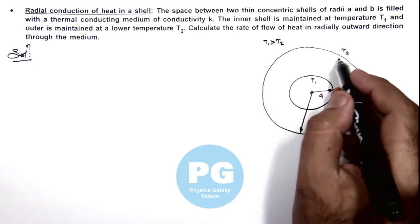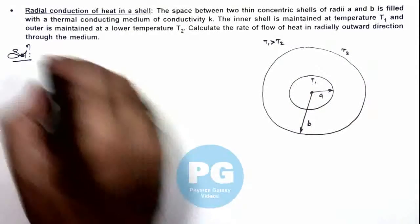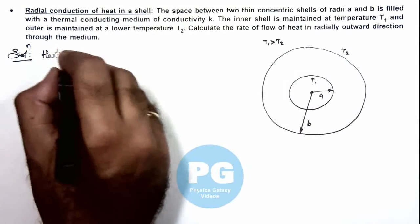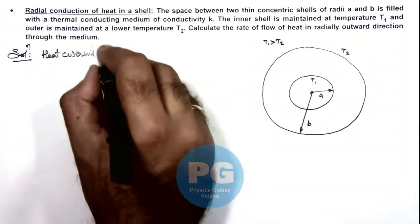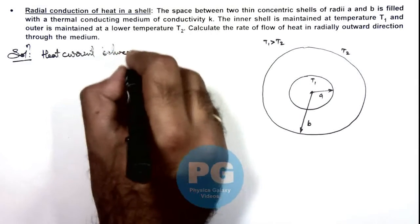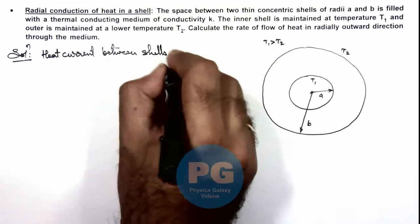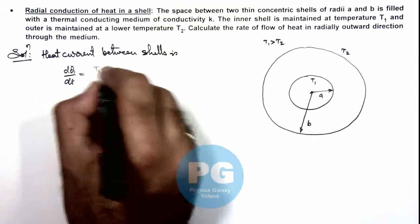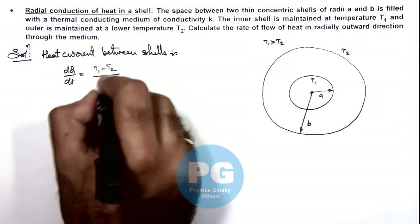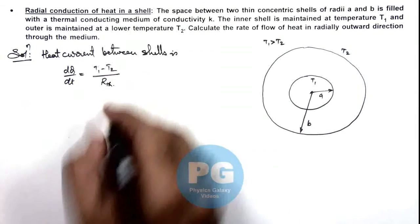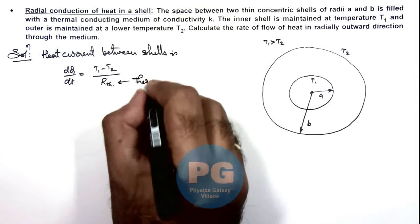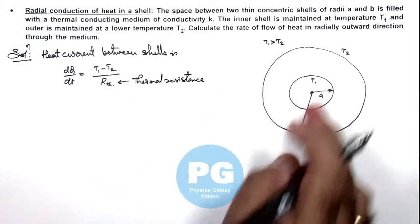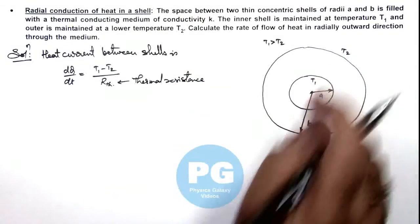We need to calculate the thermal resistance of this medium. Here we can directly write the heat current element between shells. This we can write as dQ/dt, the rate of flow of heat, is T₁ minus T₂ divided by the thermal resistance of shells. Here we can write this as the thermal resistance of the medium between the shells.